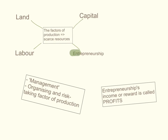Last on our list is entrepreneurship. Entrepreneurship is about management — it is the organizing and risk-taking factor of production. Someone needs to take the risk and organize the other three factors of production, combining them together into a business venture or productive economic activity. Because entrepreneurship is all about organizing and risk-taking, the income or reward that the entrepreneur receives is referred to as profits. It's very important to be able to distinguish between the four factors of production as well as their respective income types in economics.